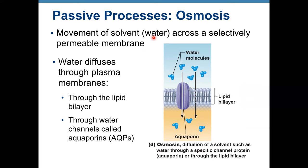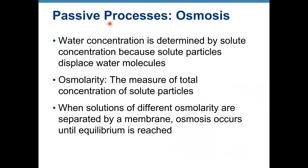Osmosis is the movement of water — the solvent — across a selectively permeable membrane. Some water diffuses through the plasma membrane and some uses special aquaporins. Water concentration is determined by solute concentration: more solute means less water in the solution; less solute means more water. Osmolarity is the measure of total concentration of solute particles. When solutes of different osmolarity are separated by a membrane, osmosis occurs until equilibrium is reached.